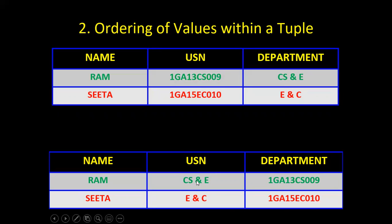In the first tuple, I placed the USN value in the department column and the department value in the USN column. After exchanging, checking Ram's details: originally Ram has USN 1GA13CS009 and belongs to CS department. After exchanging the values within the tuple, Ram now appears to belong to department '1GA13CS009' and his USN shows 'CS' — there is no meaning at all. It has damaged the actual meaning of the original tuple.